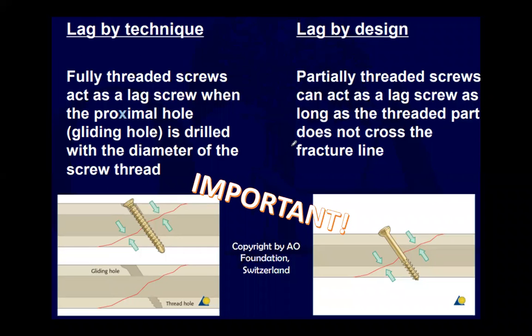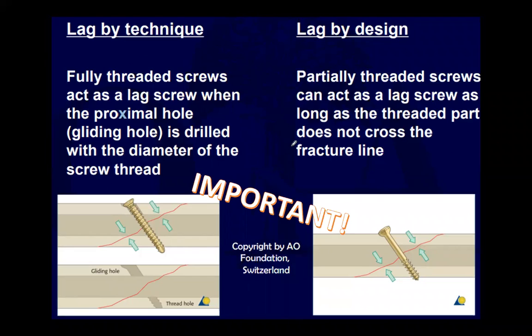Lag by technique uses a fully threaded screw that is overdrilled proximally with the thread diameter — creating a gliding hole — and then underdrilled through the distal portion. This allows the fully threaded screw to compress by technique. Lag by design uses a partially threaded screw with threads only in the distal portion — these partially threaded screws act as a lag screw and compress the fragment as soon as they engage.